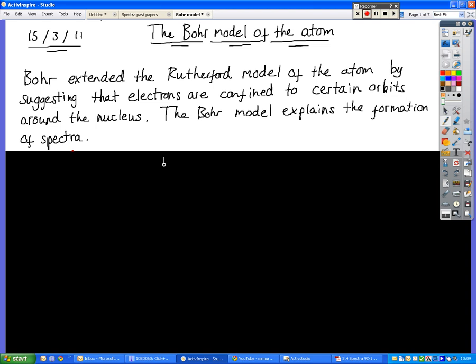The Rutherford model of the atom being, he's got a gold leaf, fires alpha particles at that gold leaf, they bounce back. Because they bounce back, that indicated that there must be something in the middle of the atom. He theorized that that was the nucleus and that most of the mass within an atom was inside the nucleus.